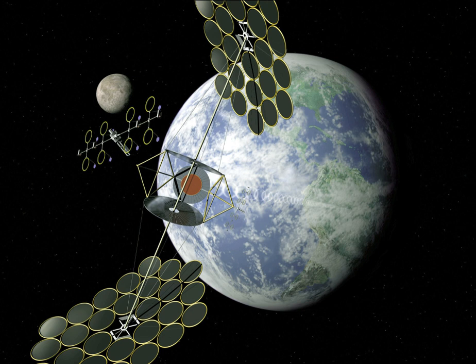The SBSP concept is attractive because space has several major advantages over the Earth's surface for the collection of solar power. Collecting surfaces could receive much more intense sunlight, owing to the lack of obstructions such as atmospheric gases, clouds, dust and other weather events. Consequently, the intensity in orbit is approximately 144% of the maximum attainable intensity on Earth's surface. A satellite could be illuminated over 99% of the time, and be in Earth's shadow a maximum of only 72 minutes per night at the spring and fall equinoxes at local midnight.